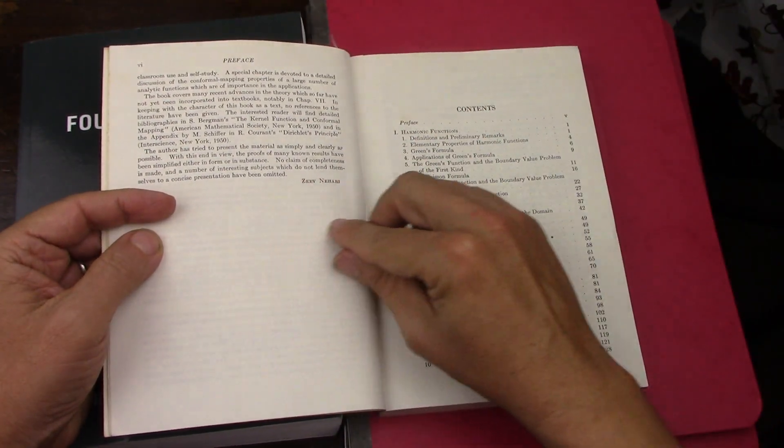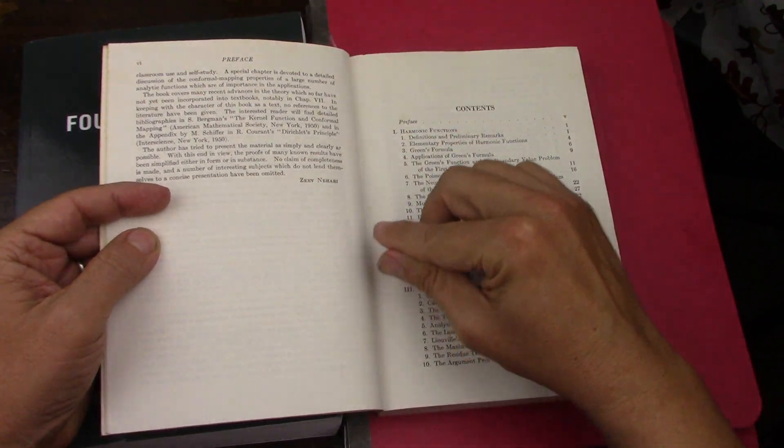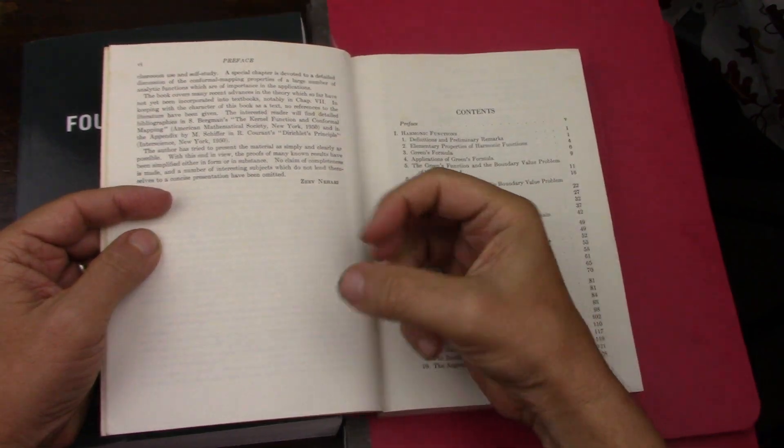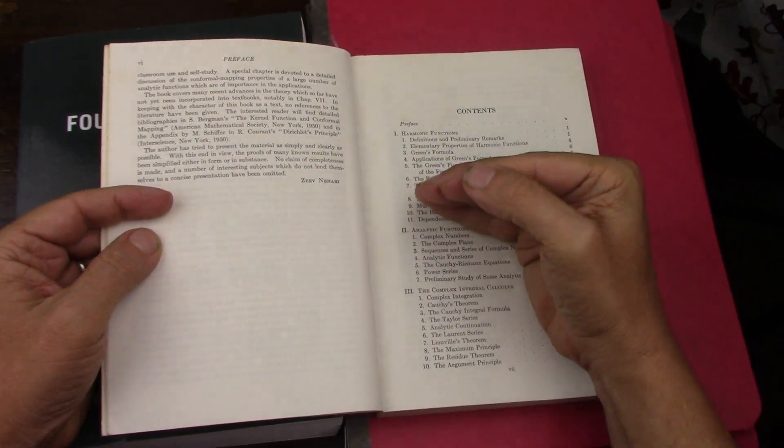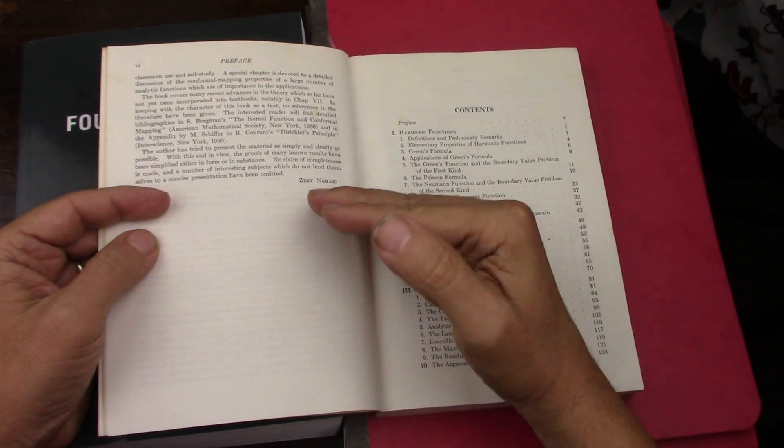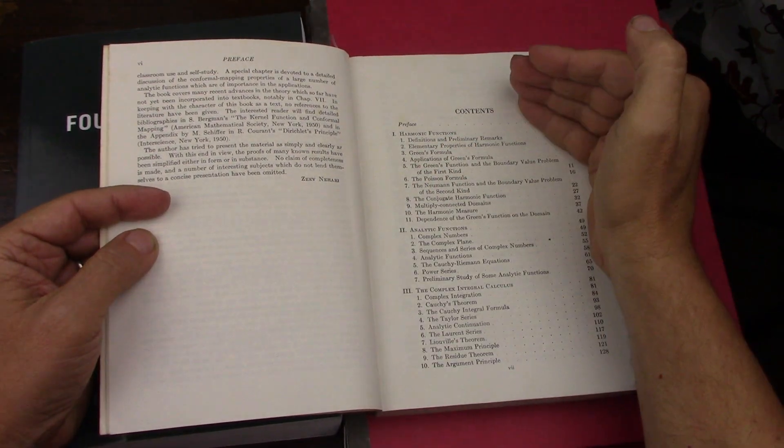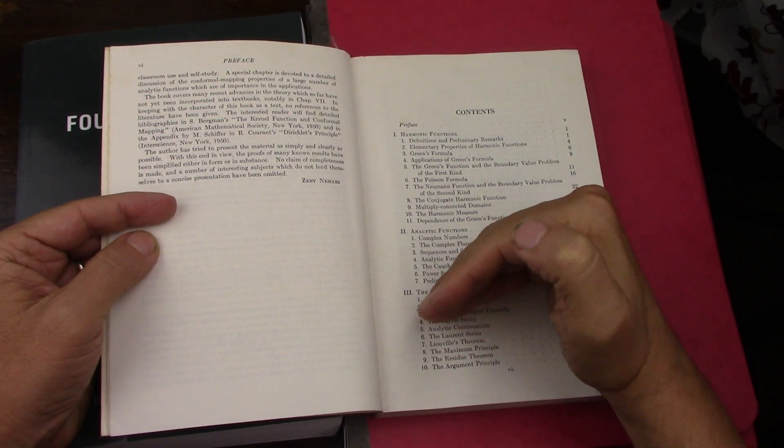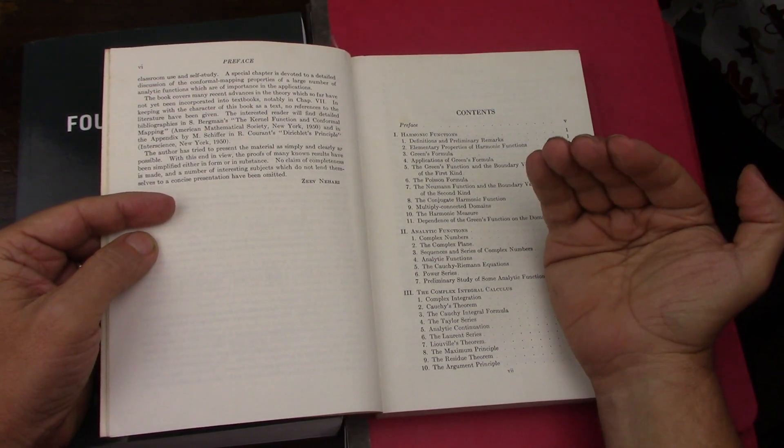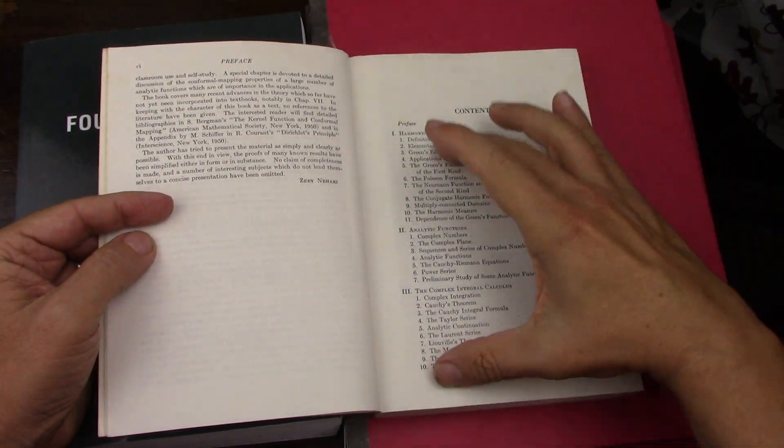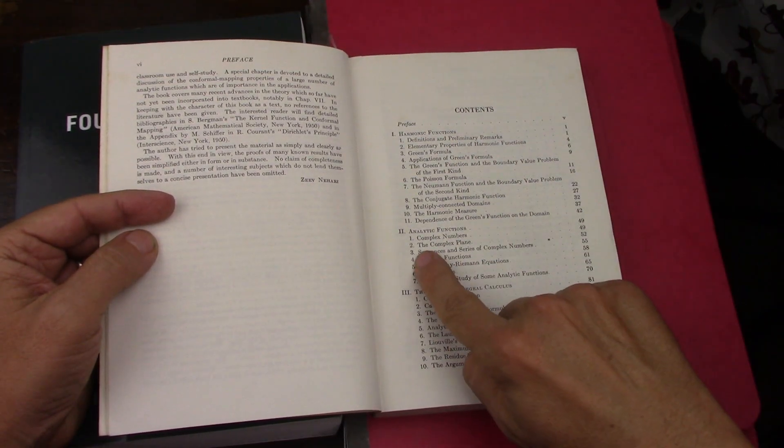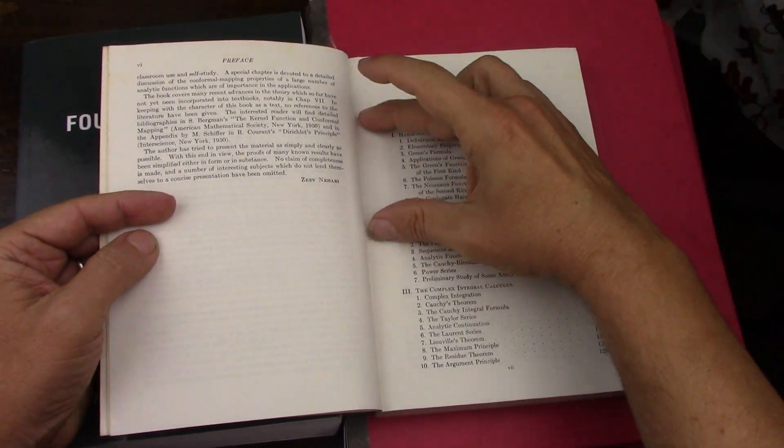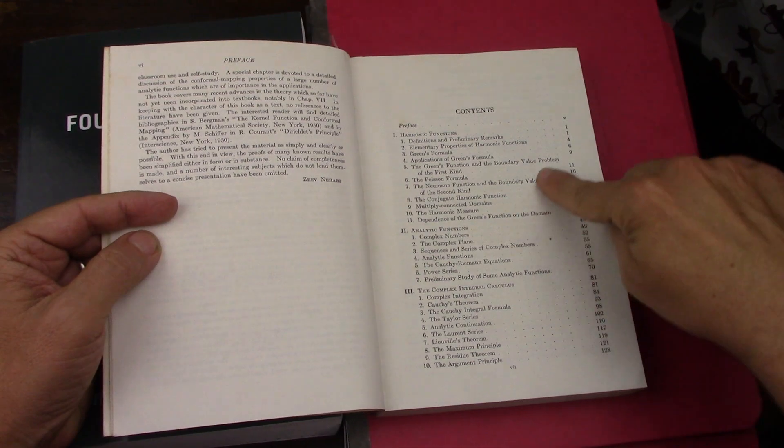But when you look through the table of contents it's just very much like a Saff and Snyder except what I really like is it focuses a lot on harmonic functions and this is exactly what is missing from Saff and Snyder. I think Saff and Snyder I like that they did small harmonic functions sections at the end of each chapter but they never really put a bow on it. They tried to with conformal mapping but it doesn't work because when they talk about conformal mapping they'll talk about the mapping itself and then they'll plop in a harmonic function and you're like where did this come from.